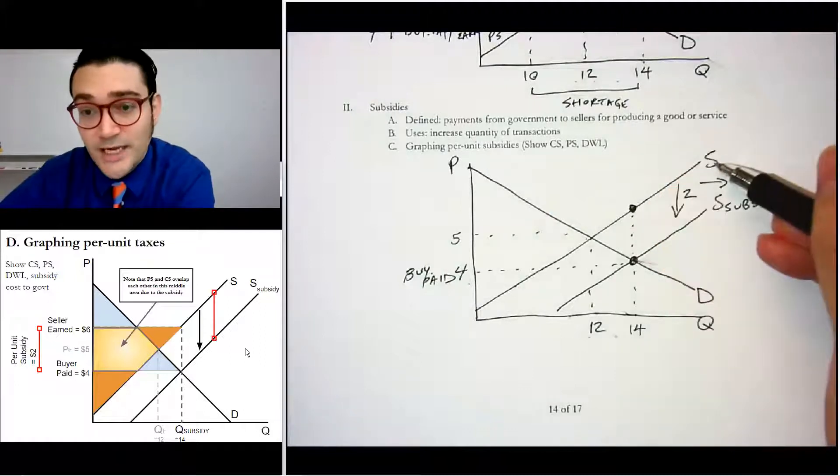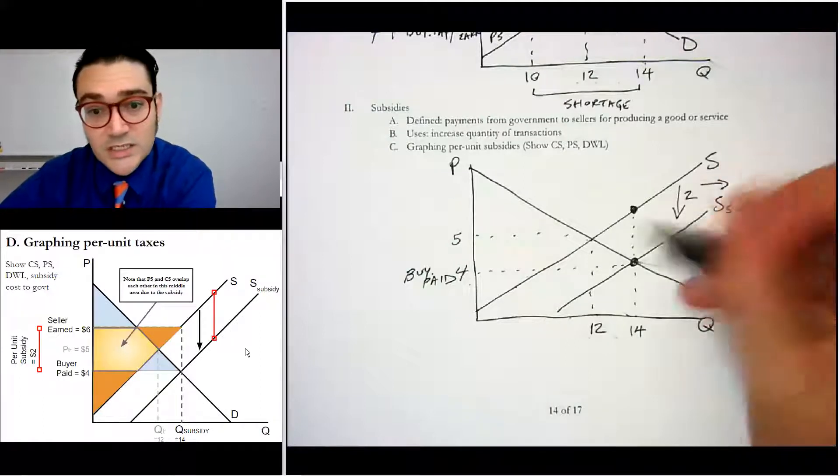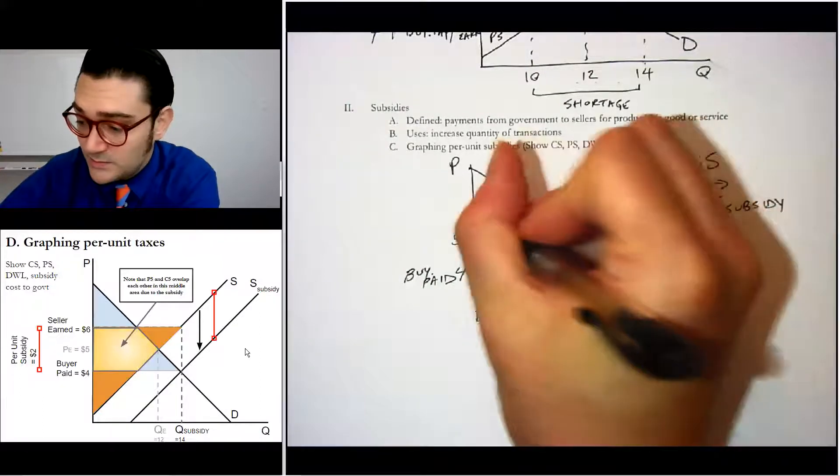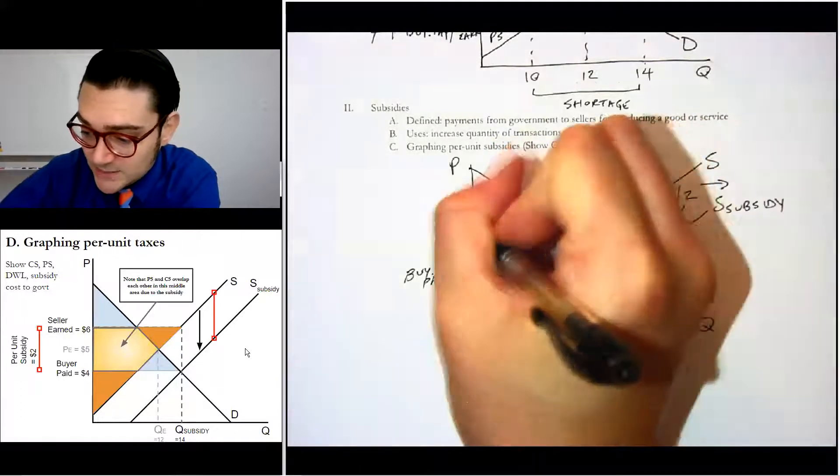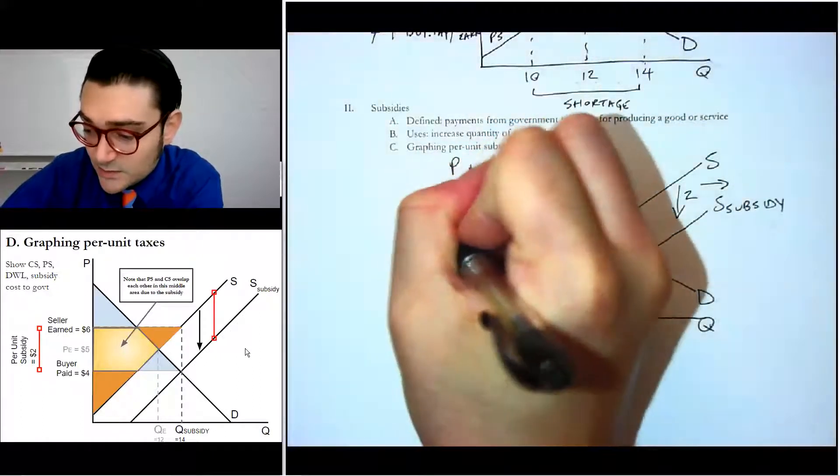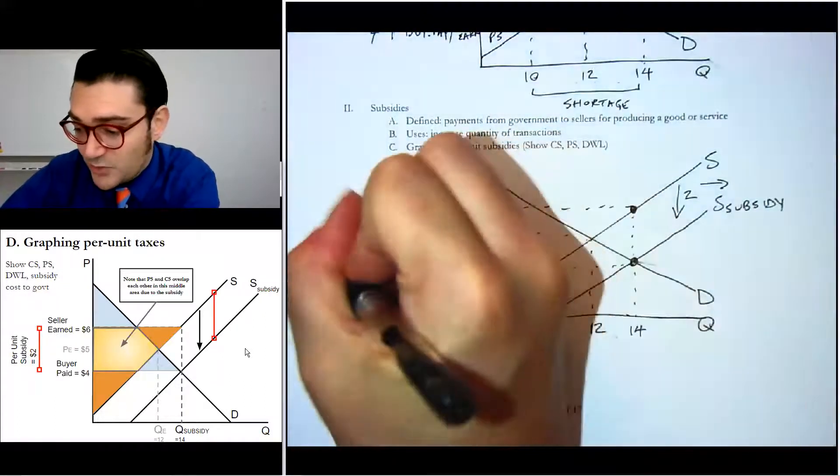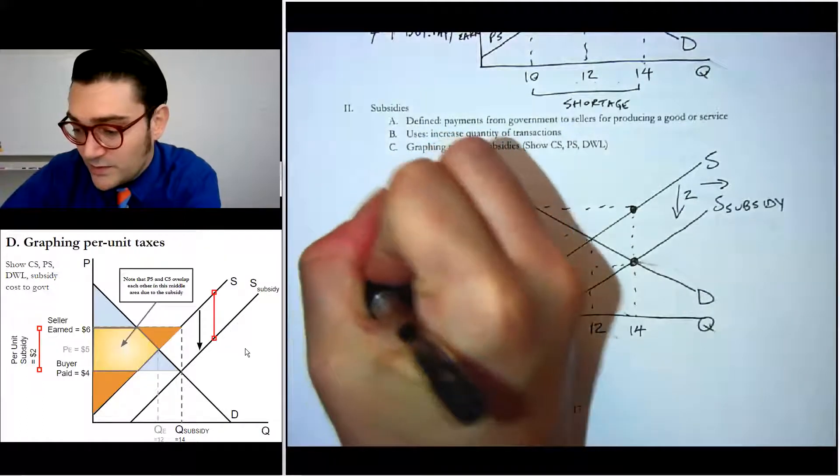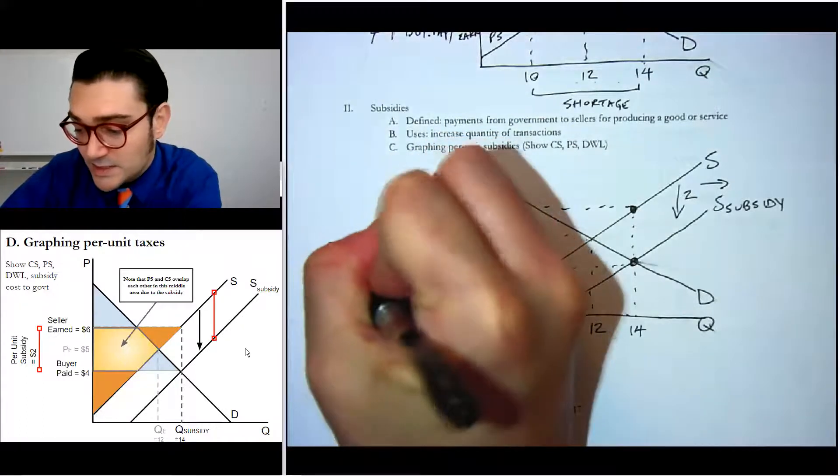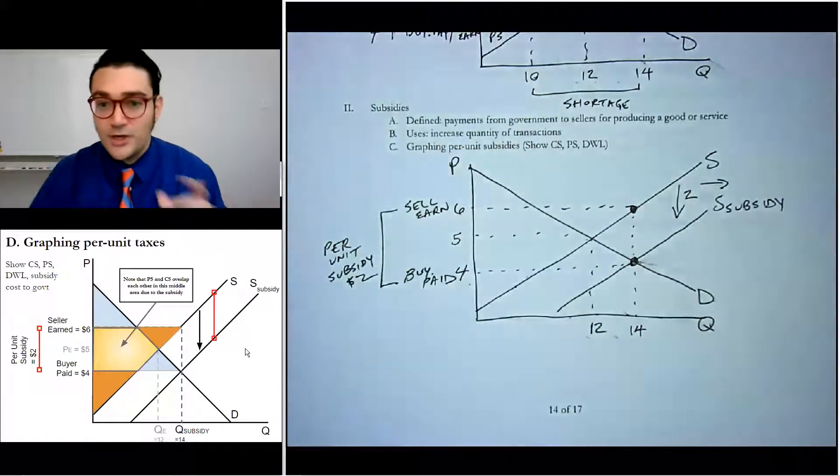So the buyers paid four, the government adds in two. And so how much do the sellers get to keep? Well, on the original supply curve is how much they get to keep. Remember this vertical distance is two. So two plus four must be six. So the sellers earned or the sellers get to keep six. And that vertical distance is the per unit subsidy. And in this case, it's $2.